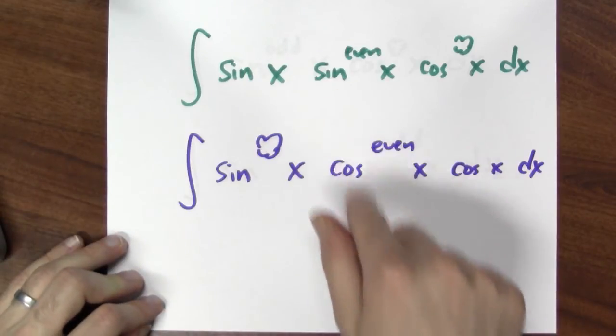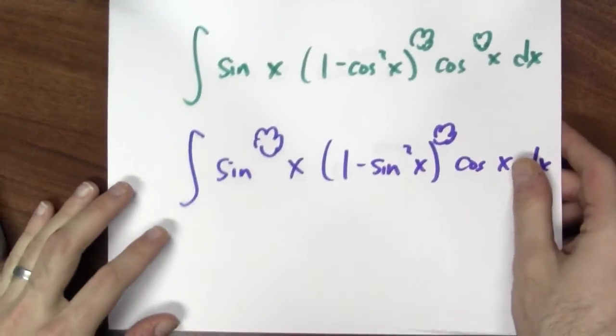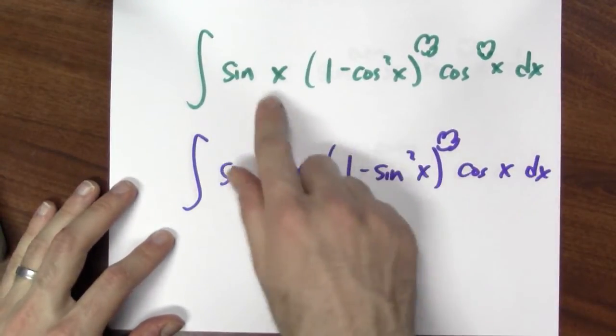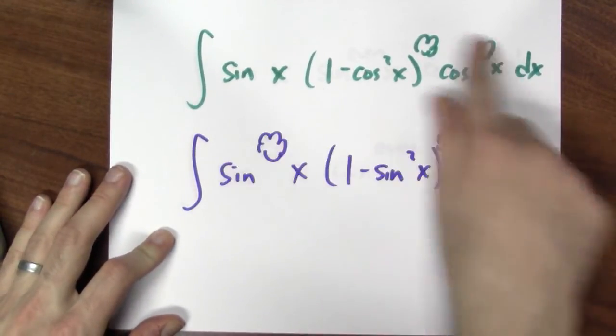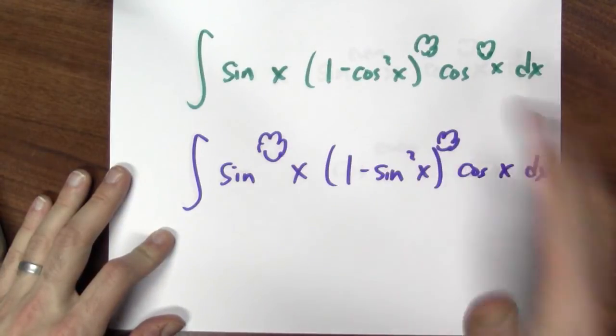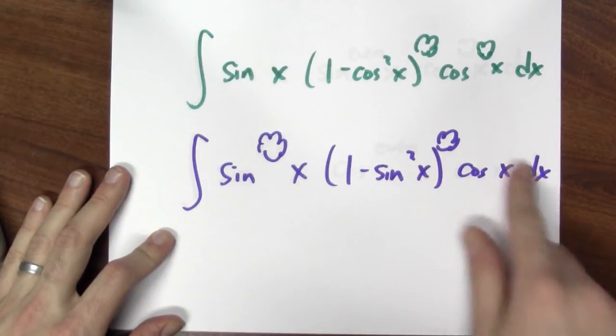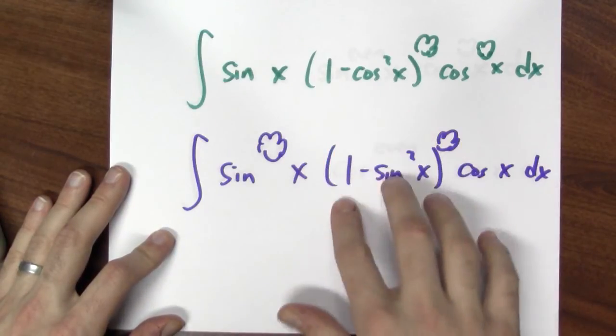And then, since this is an even number here, I can rewrite those in terms of the other. So then I'll end up with a single sine times a bunch of cosines, really a polynomial in cosine x, or a polynomial in sine x times cosine. And then I can finish it off with a single substitution.